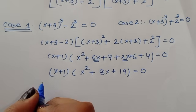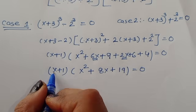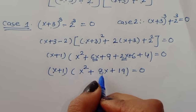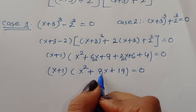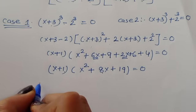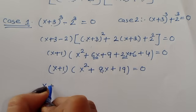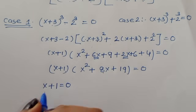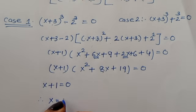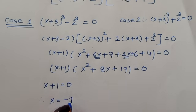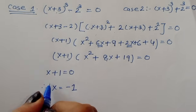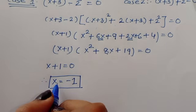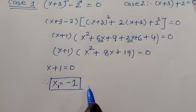From Case 1 we got two equations: x+1 = 0 and x² + 8x + 19 = 0. From the first one, x+1 = 0, therefore x = −1. So x₁ = −1.